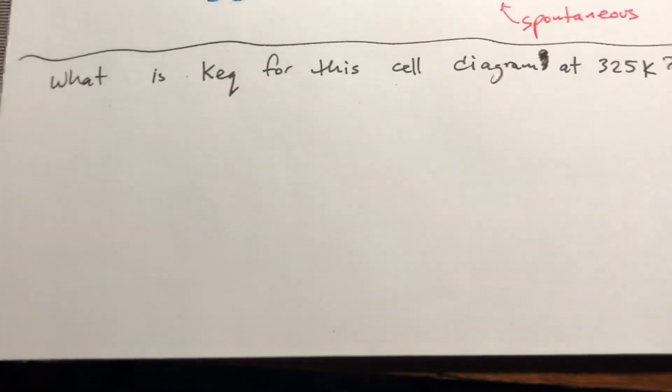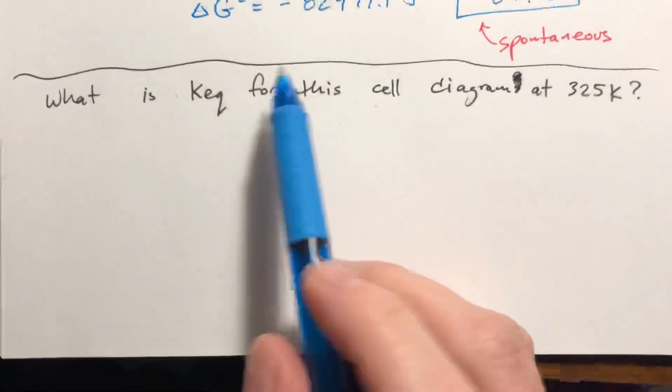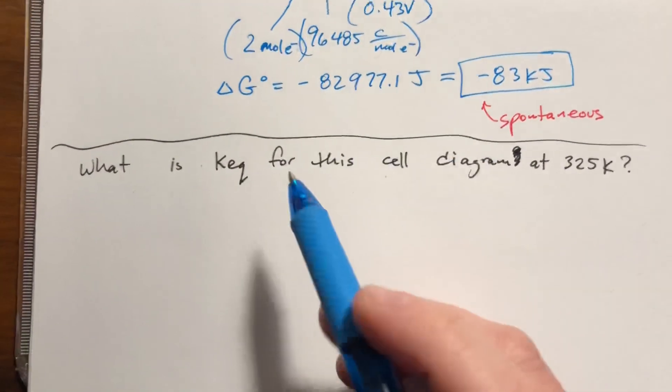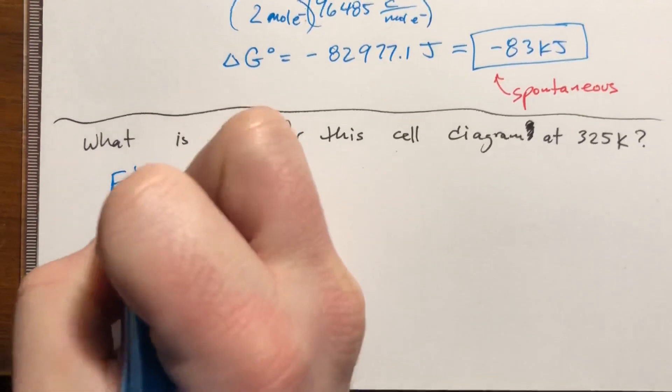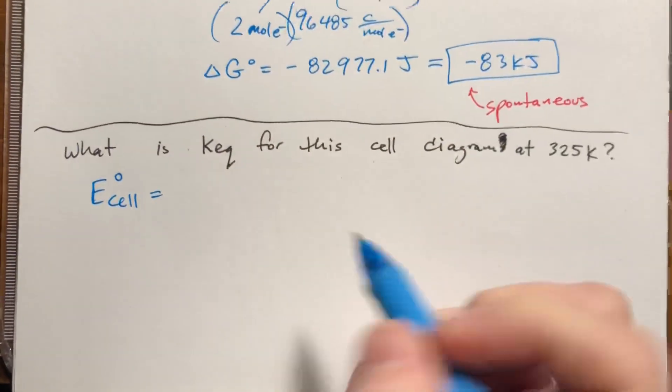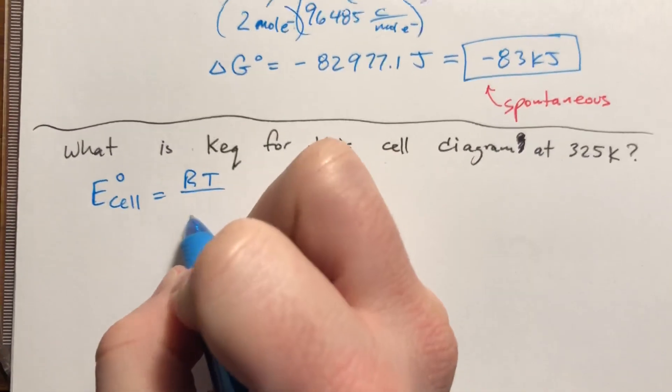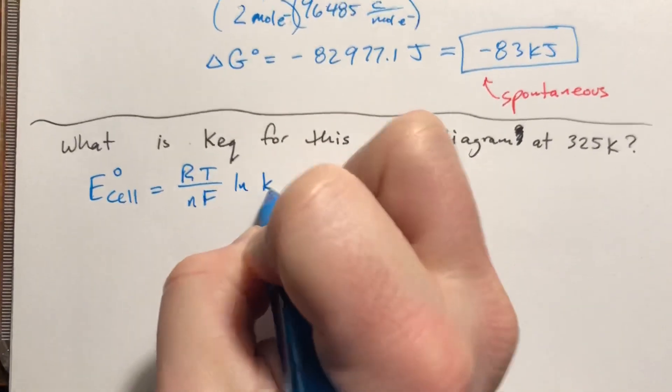And now we want to know what is Keq for this reaction. We had a reaction in the previous chapter that related delta G and Keq, but there is another equation that relates the cell potential at standard conditions to Keq. And it's RT over NF times natural log of Keq.